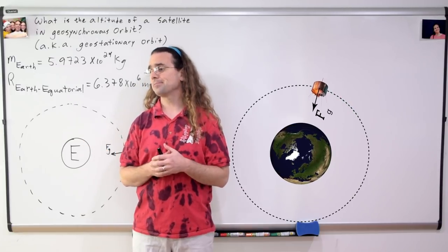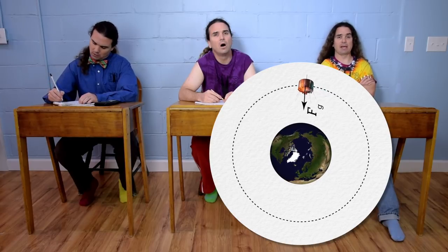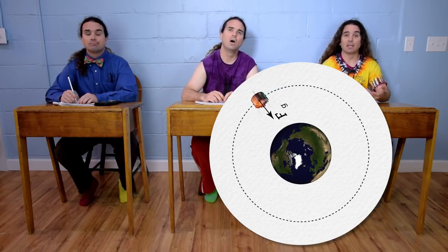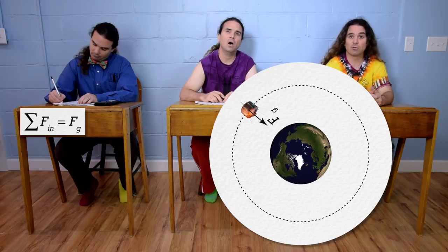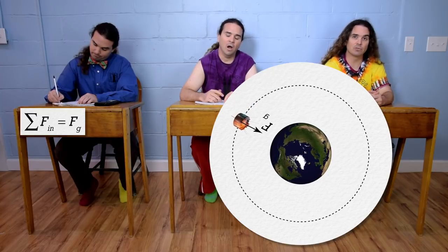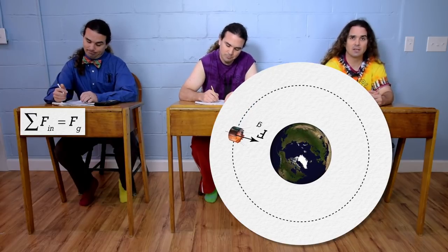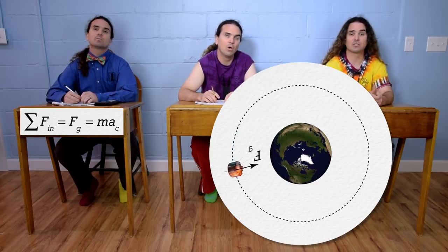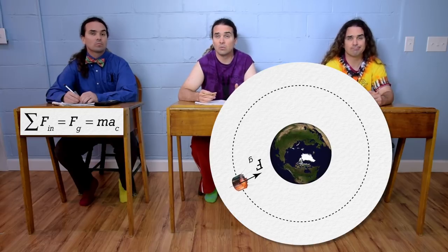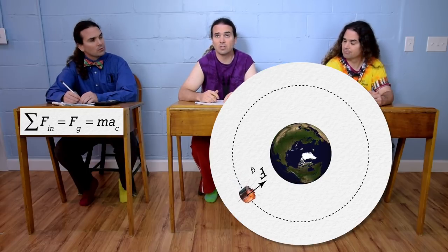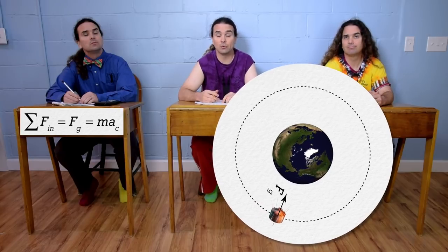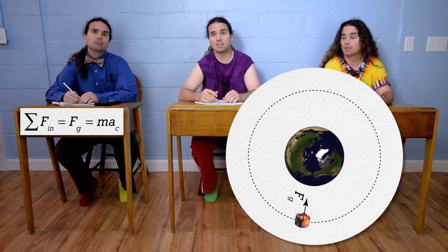We've drawn a free body diagram, so let's sum the forces. We need to sum the forces in the inward direction. The net force in the inward direction equals the force of gravity, and it equals mass times the centripetal acceleration. So the net force in the inward direction is the force of gravity, and therefore is the centripetal force which keeps the satellite in orbit around the Earth. That makes sense.